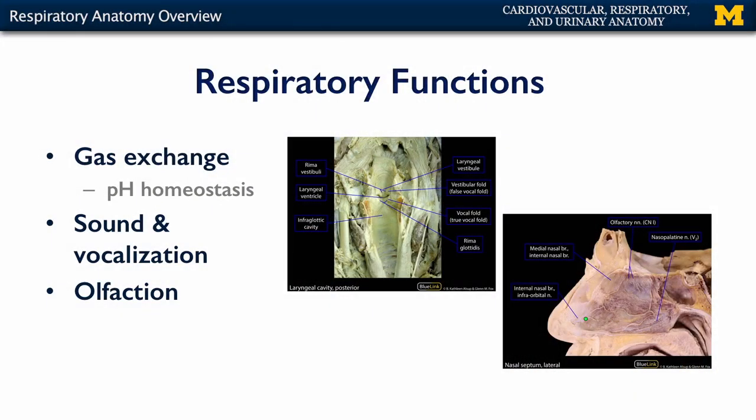You may recall from the cardiovascular system that the respiratory system is helpful with respect to maintaining pH homeostasis. Carbon dioxide as a volatile gas can lower the pH of the blood. If an individual were to increase their rate of respiration — if they were to breathe faster — they can blow off more carbon dioxide and thus help to increase the pH of the blood, or make it less acidic.